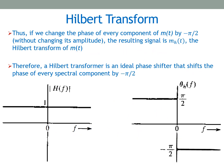To summarize the Hilbert transform: if we change the phase of every component of m(t) by −π/2 without changing its amplitude, the resulting signal is m̂(t), the Hilbert transform of m(t). This is how we apply a Hilbert transform — we shift the phase by −π/2, and at the output we get the Hilbert transform. The magnitude of the Hilbert transform is 1, but its phase is −π/2 for frequencies f > 0.